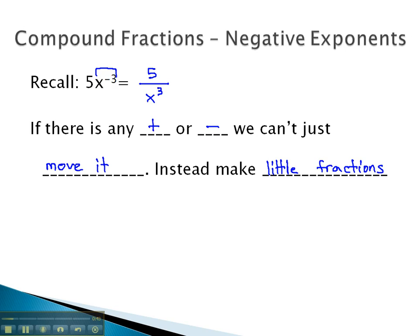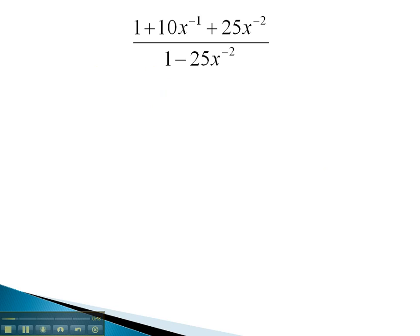Let's take a look at some examples where we have negative exponents creating a compound fraction. In this problem, each negative exponent will create a little fraction in its place. This gives us 1 plus 10 over x to the first, plus 25 over x squared. Notice only the variable moves, because that's the only part with the negative exponent.